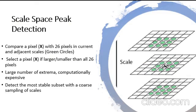In scale-space peak detection, we compare a pixel x with 26 pixels in the current and adjacent scales, which are represented in the image as green circles. We select a pixel x if it is larger or smaller than all 26 pixels. This gives a large number of extrema, which is computationally expensive.